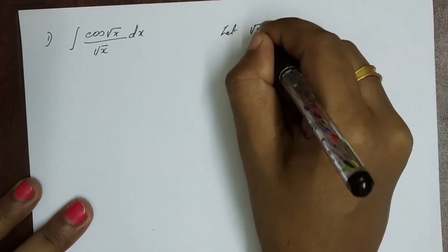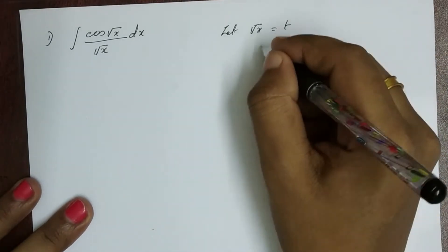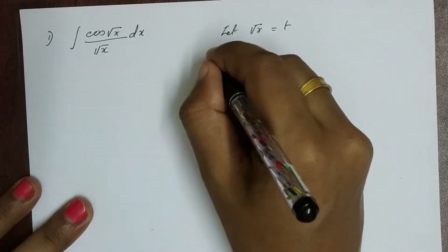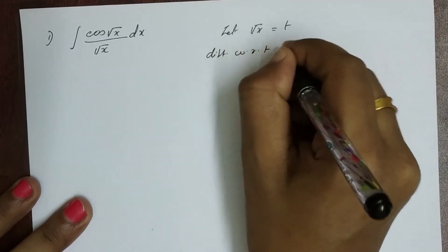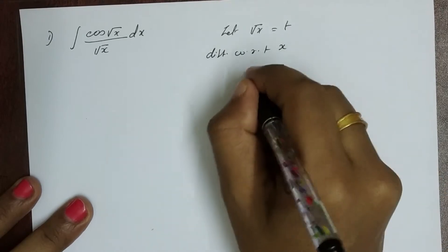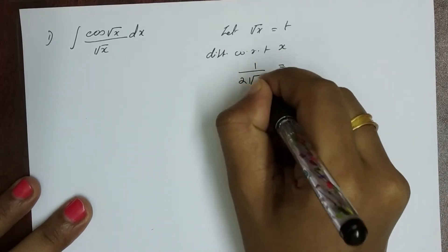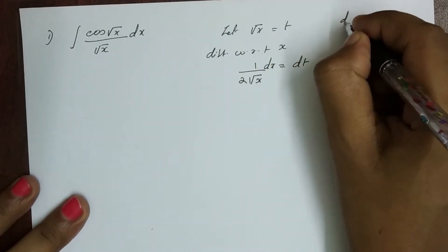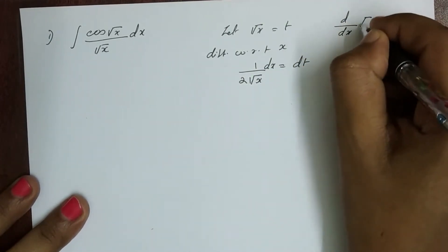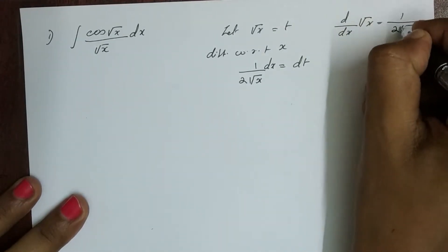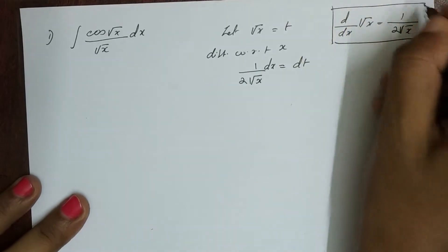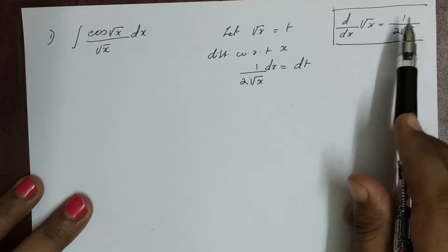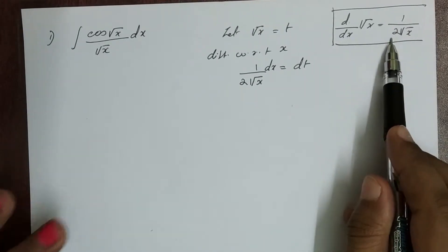Let √x equal to t. This is the derivative of √x — differentiate with respect to x. 1 by 2√x into dx is equal to dt. The derivative of √x is equal to 1 by 2√x.